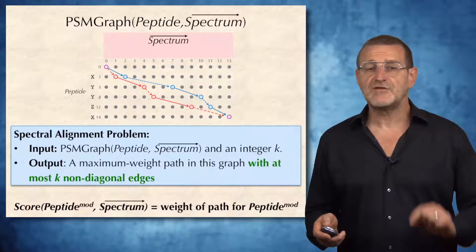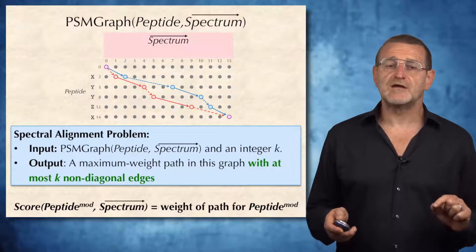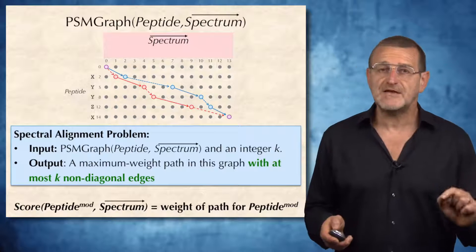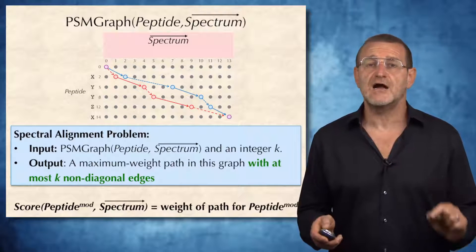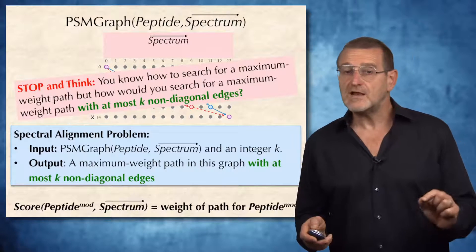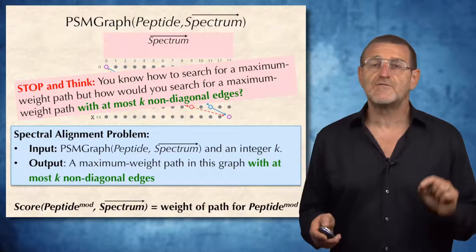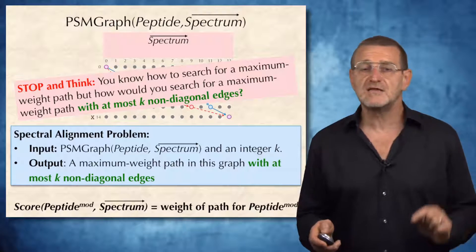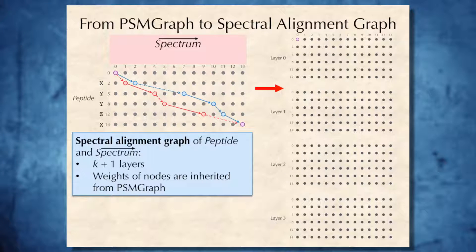And therefore, we have reduced the spectral alignment problem to the following problem in the PSM graph. Given PSM graph of peptide and spectrum and an integer k, we want to find a maximum weight path in this graph with at most k non-diagonal edges. Well, we already know how to search for maximum weight path, but how would you search for a maximum weight path with an additional constraint that it has at most k non-diagonal edges?